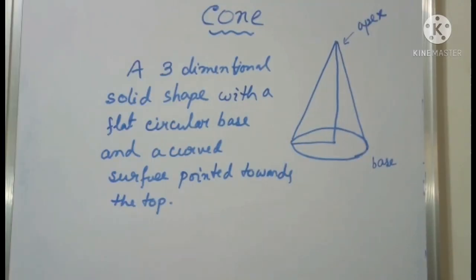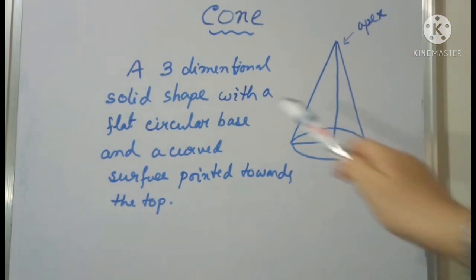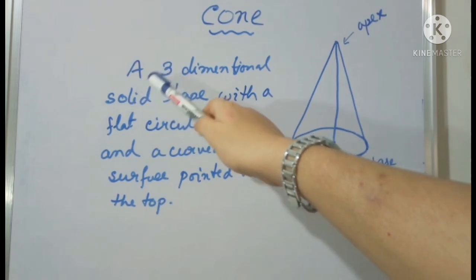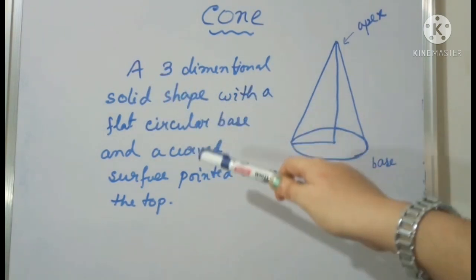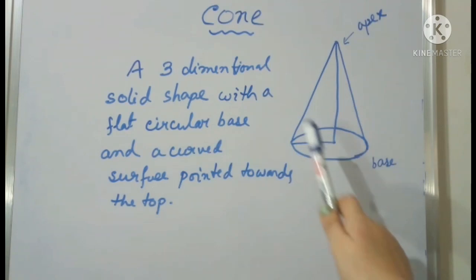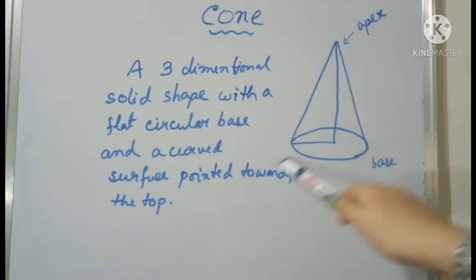Next, we are going to discuss the basic structure of a cone. Here is the diagram of the basic structure of a cone. It is also a three dimensional solid shape, but it has a flat circular base and a curved surface pointed towards the top.